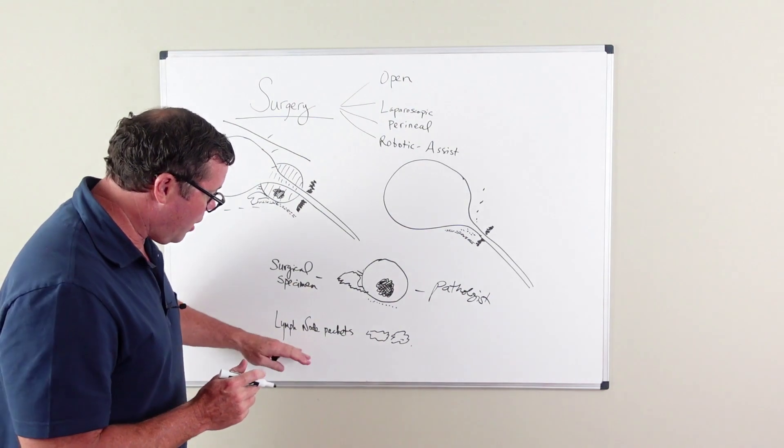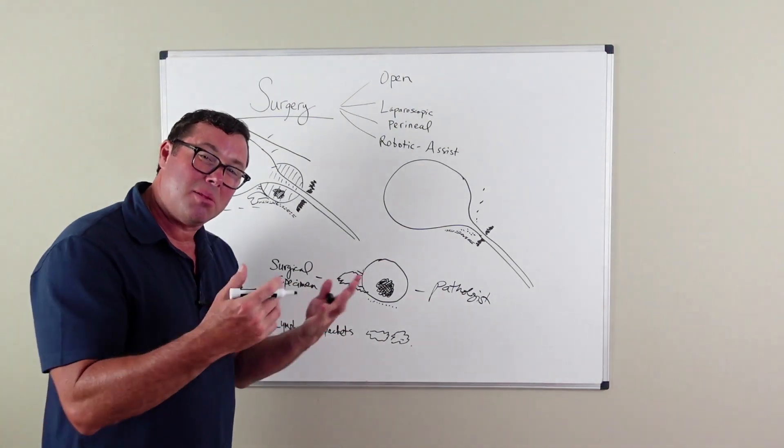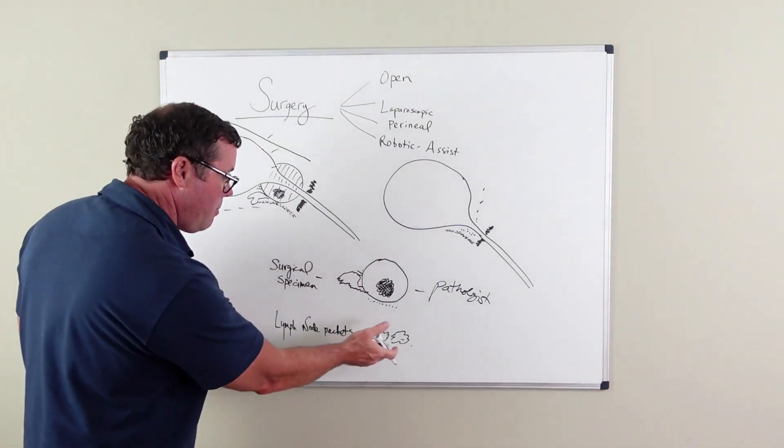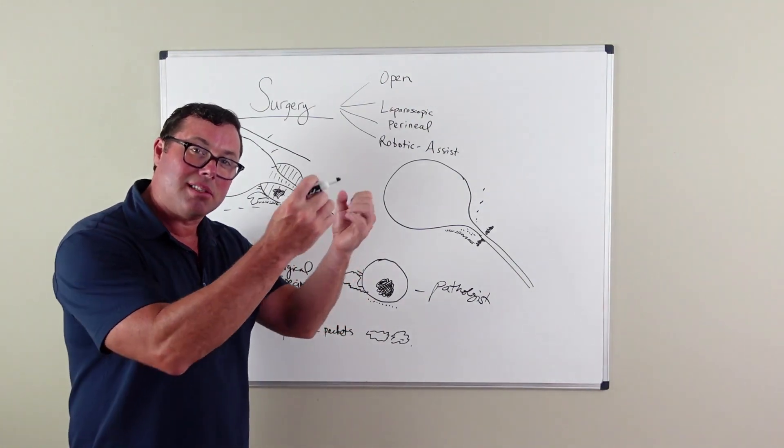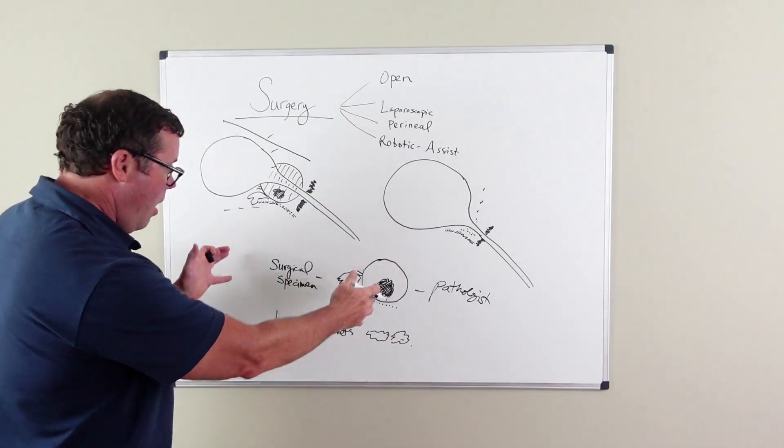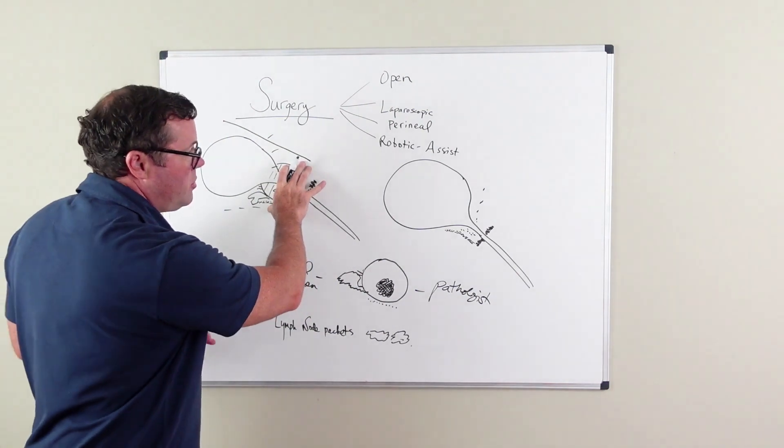The pathologist will also look at lymph node packets. Sometimes these lymph node packets are removed to look for extension of cancer into the lymph nodes. So all of that is done with surgery.